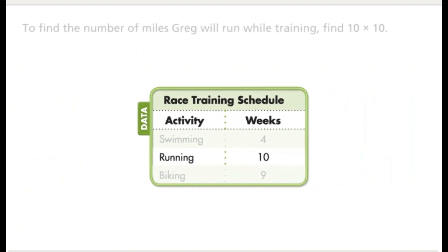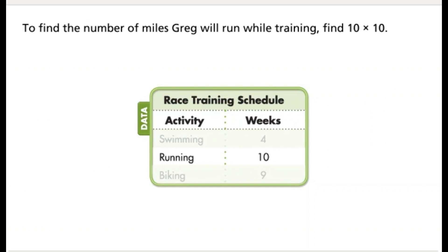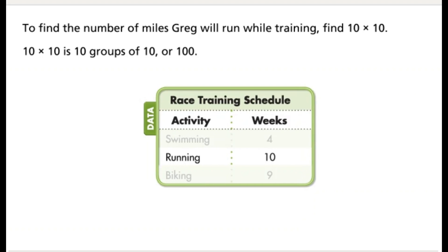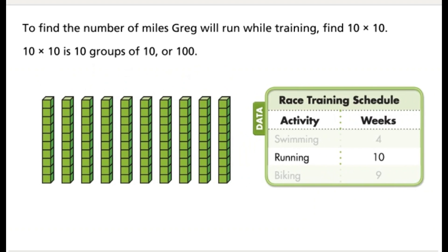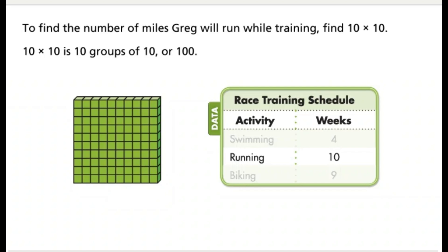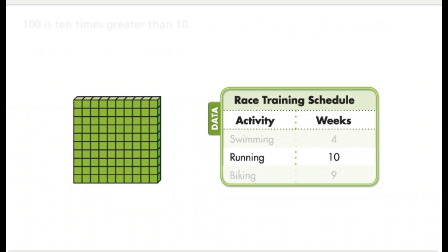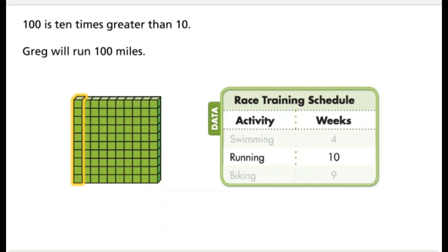To find the number of miles Greg will run while training, find 10 times 10. 10 times 10 is 10 groups of 10, or 100. 100 is 10 times greater than 10. Greg will run 100 miles.